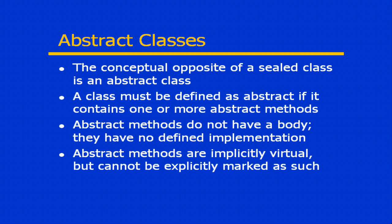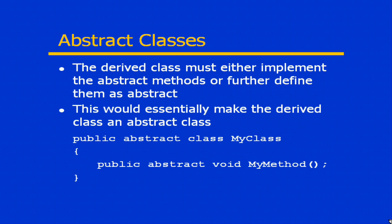What's the purpose of having a method that has no implementation at all? The real advantage with abstract classes is that they can act as a contract. If I have a class that derives from an abstract class, I know for certainty that that derived class must have an implementation for those specific methods — it's guaranteed, because you must provide an overriding implementation for every abstract method defined within an abstract class. That means the derived class must either implement the abstract methods or further define them as abstract, in which case the derived class would then essentially be an abstract class as well.